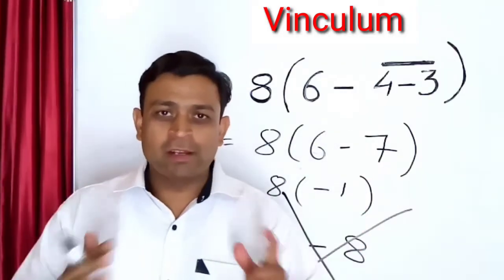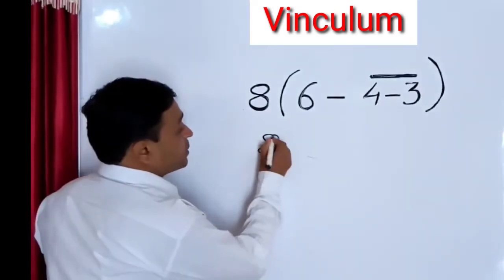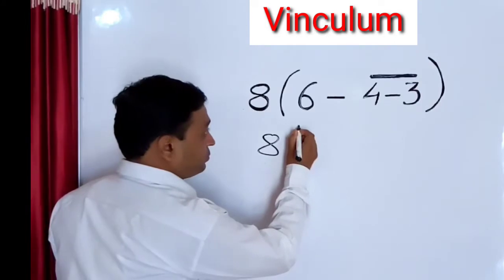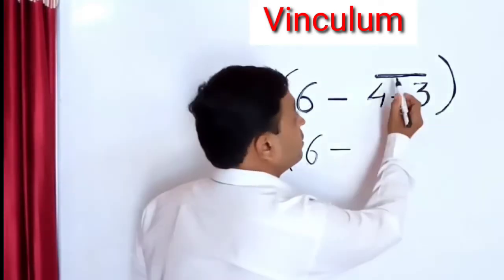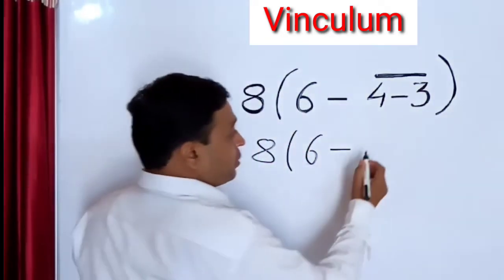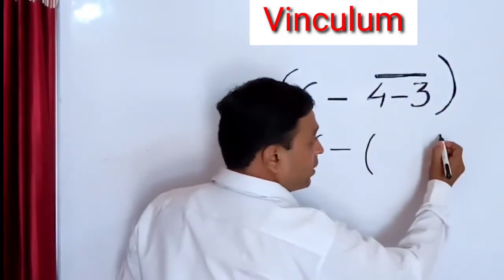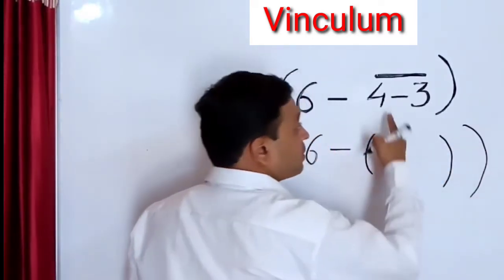So let us see the correct method to solve this problem. Then we have to take 8 parenthesis 6 minus, then we have to understand that anything falls under this vinculum sign comes under one group. So we have to create one separate bracket, that is round bracket, for this step, 4 minus 3.